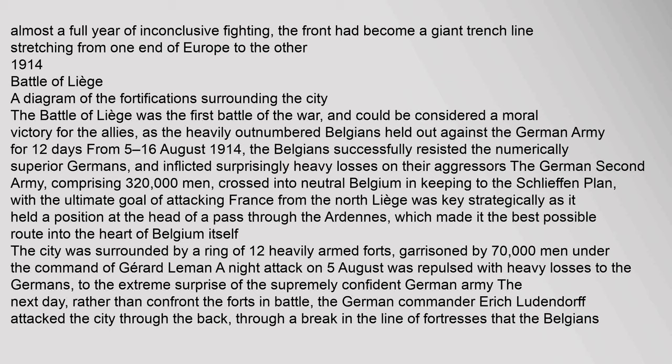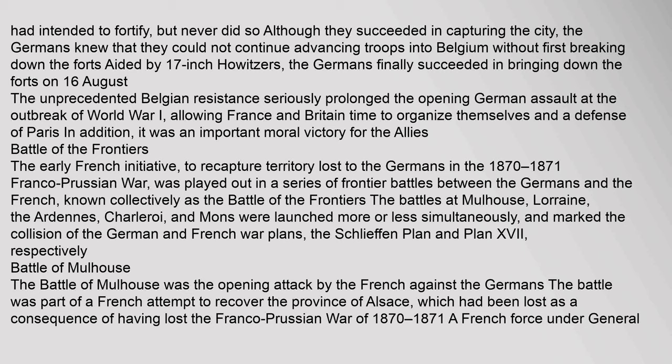Liege was key strategically as it held a position at the head of a pass through the Ardennes, making it the best possible route into the heart of Belgium. The city was surrounded by a ring of 12 heavily armed forts, garrisoned by 70,000 men under the command of Gérard Liemann. A night attack on 5 August was repulsed with heavy losses to the Germans. Rather than confront the forts in battle, German commander Erich Ludendorff attacked the city through the back, through a break in the line of fortresses that the Belgians had intended to fortify but never did.